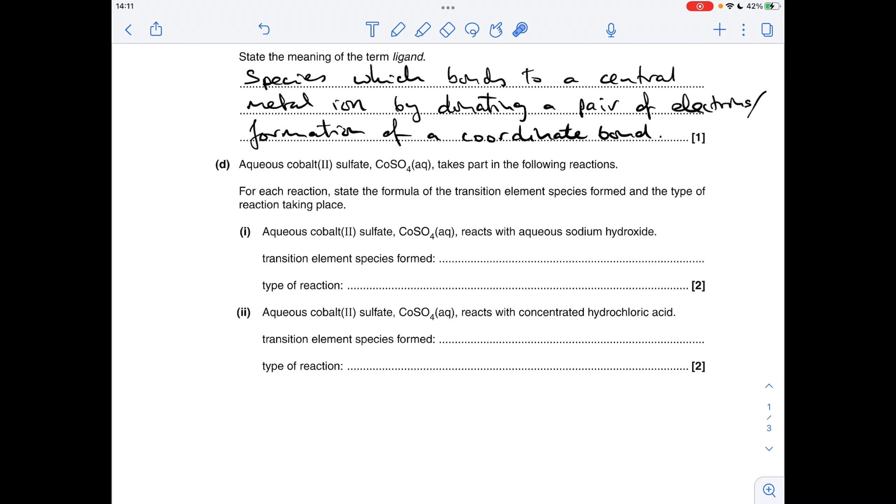Part D. Now you'll notice it's asking us about cobalt 2 sulfate. Now cobalt transition metal chemistry is not actually specified in the syllabus, so we're going to have to apply our knowledge to this. So if you think something like copper 2 sulfate, what happens when it reacts with aqueous sodium hydroxide? Well, you just get the hydroxide precipitate. Obviously the reaction type is precipitation, so in the case of cobalt you're going to get cobalt 2 hydroxide. So there's the simple formula you could give, or you could give the slightly more complicated formula, and there's the type of reaction.